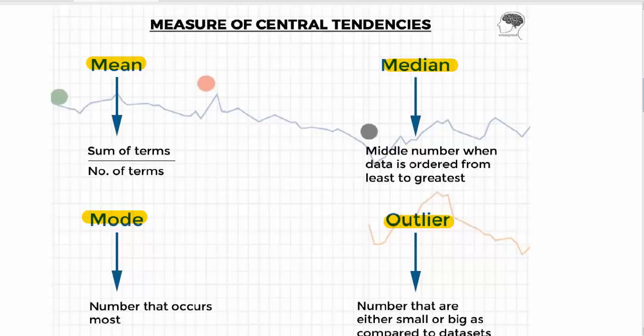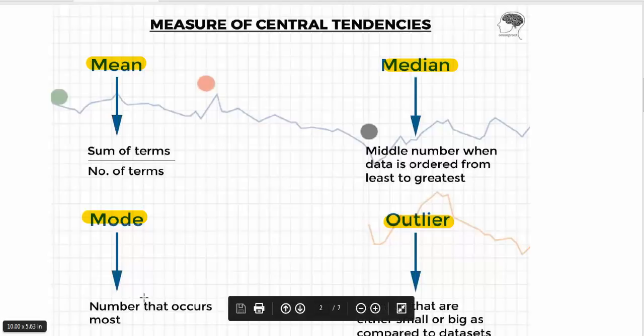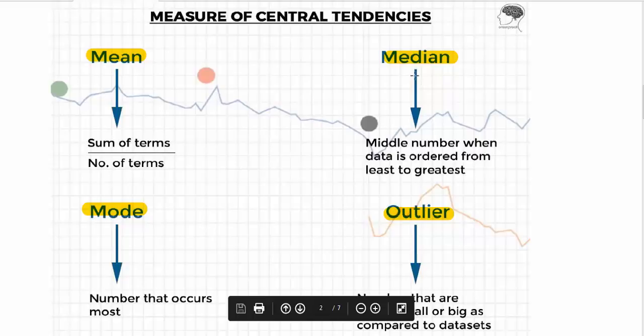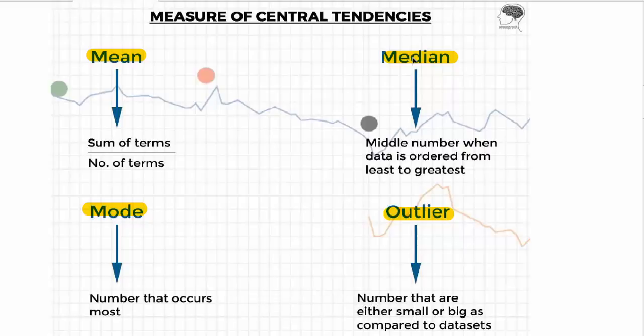Mean means average. Median means the middle number when data is ordered or arranged from least to greatest. Mode means the number that occurs the most. Sometimes considering the median, when we arrange the data, if the data is either even or odd we can count the data. If the data is odd, like seven, we get three terms on the left, three terms on the right, so we can get the middle term. But for even data sets, we have to take the average of two terms to get the median.